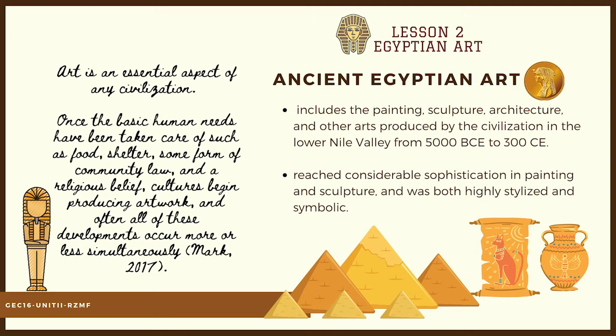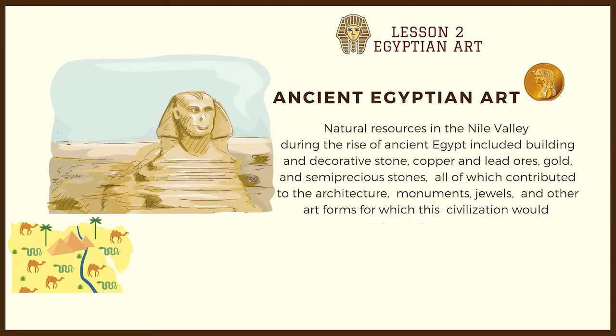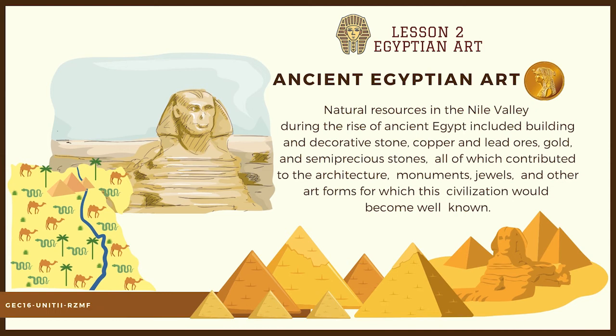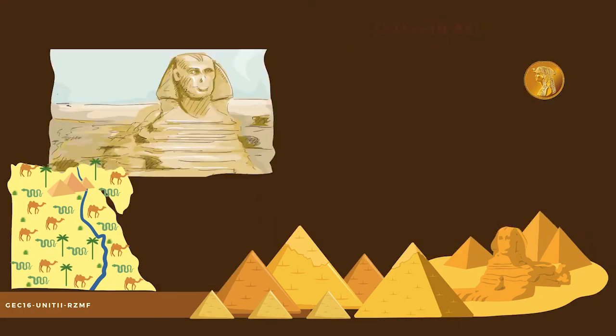Egyptian art includes the painting, sculpture, architecture, and other arts produced by the civilization in the Lower Nile Valley from 5000 B.C.E. to 300 C.E. It reached considerable sophistication in painting and sculpture, and was both highly stylized and symbolic. Natural resources in the Nile Valley during the rise of ancient Egypt included building and decorative stone, copper and lead ores, gold, and semi-precious stones, all of which contributed to the architecture, monuments, jewels, and other art forms for which this civilization would become well-known.